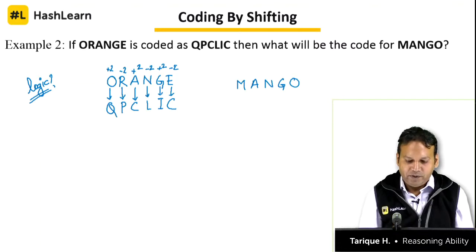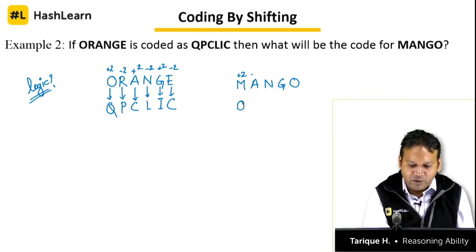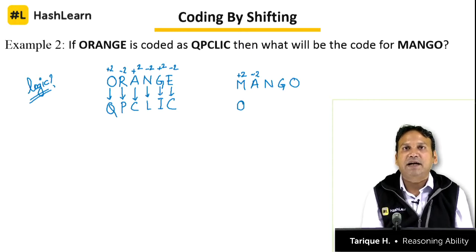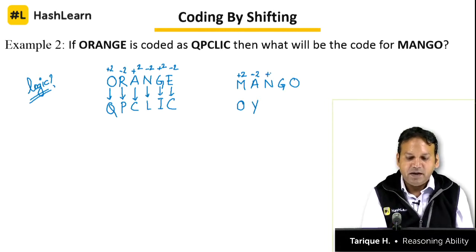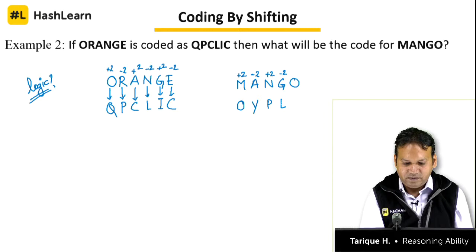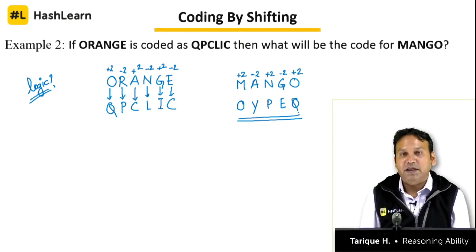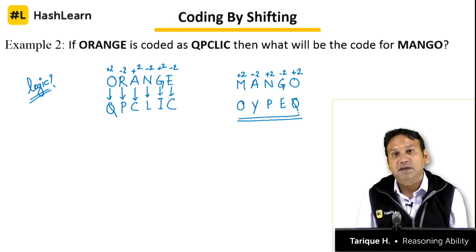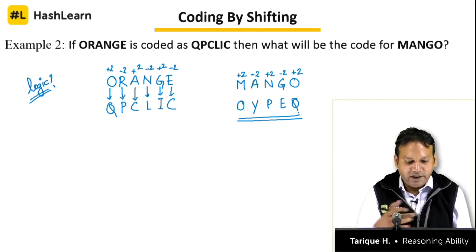Applying this to 'mango' — M plus 2 is O. A minus 2: before A comes Z, before Z comes Y, so Y. N plus 2 is P. G minus 2 gives E. O plus 2 gives Q. So the code for 'mango' is O, Y, P, E, Q — alternating plus 2 and minus 2. Once you understand the logic, the question is not difficult at all.